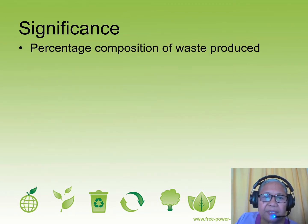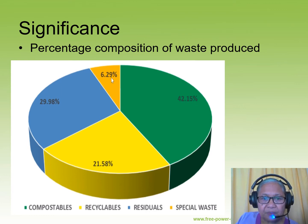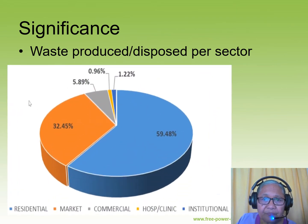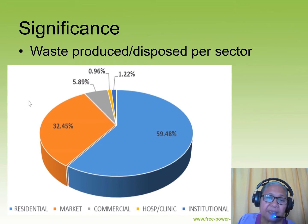We can now compute for the percentage composition of waste. You can illustrate the data by making graphs to show the percentage composition of waste produced — it's easy to read visually. You can also present waste produced and disposed per sector. From the graph, you can see that residential waste is the most abundant — the largest slice in the pie chart — followed by waste from the market, then from commercial establishments. This is another way of presenting your data.